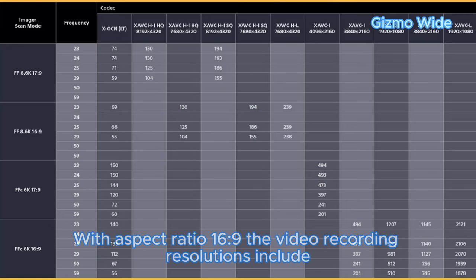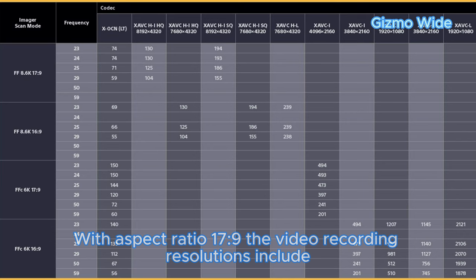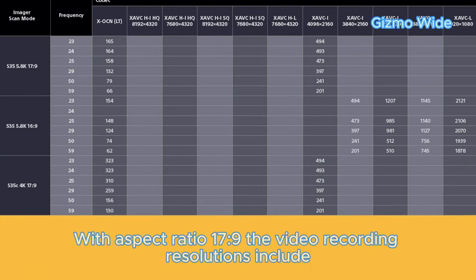The camera can record video in several different resolutions. With aspect ratio 16:9, the video recording resolutions include 8632 x 4856, 7680 x 4320, 6052 x 3404, 5760 x 3240, 3840 x 2160, and 1920 x 1080.